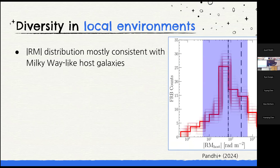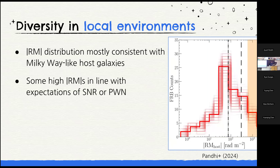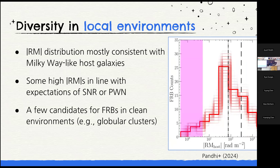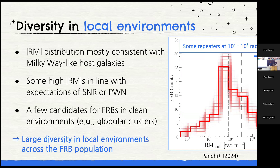Next, we looked at local environments — specifically the rotation measure contributed by the host galaxy, reflecting how dense and magnetized the material around the FRB is. A shaded middle region represents what you'd expect for an FRB in a Milky Way-like galaxy, and most of our FRBs fall in that range. Some FRBs at the high end are consistent with a dense nebular origin — like a supernova remnant or pulsar wind nebula. Others at the low end are candidates for FRBs in clean environments with weak magnetic fields, similar to an FRB known to exist in a globular cluster. We see diversity not just in emission physics but also in local environments. Repeating FRBs sit even further off this plot by an order of magnitude or more in rotation measure.